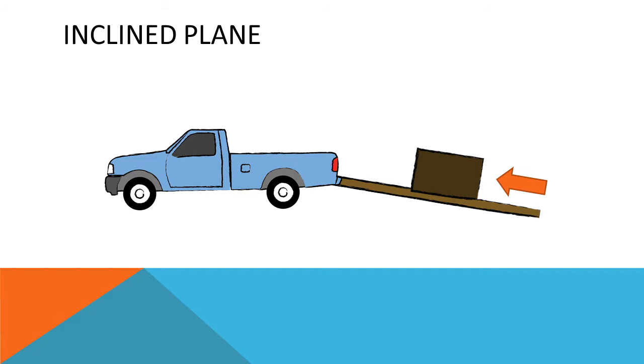It is heavy, really heavy. Now, let's say that you have a smooth board that runs from the ground to the back of the truck. This is called an inclined plane. It takes less force to push the box up the inclined plane than it does to lift it straight up.